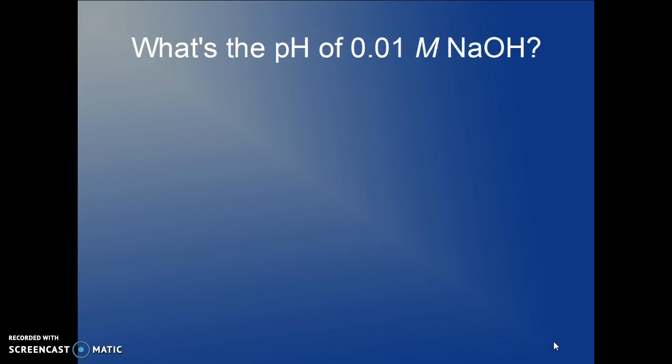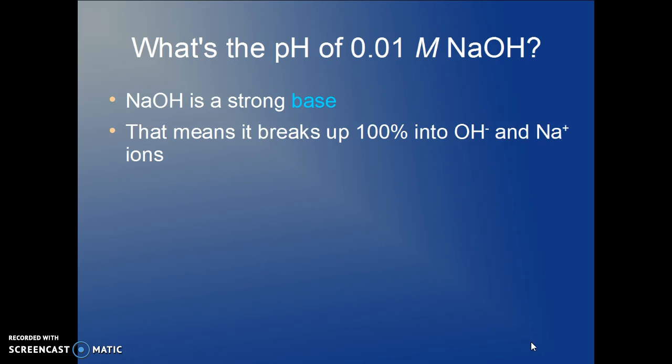Now what about if we have a base, 0.01 molar sodium hydroxide. Now sodium hydroxide is a strong base. It too breaks up a hundred percent. But now it gives hydroxide and sodium ions. So the hydroxide concentration is the same as the initial sodium hydroxide concentration, 0.01 or 1 × 10⁻² molar.